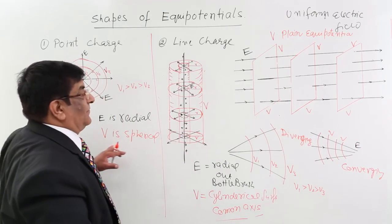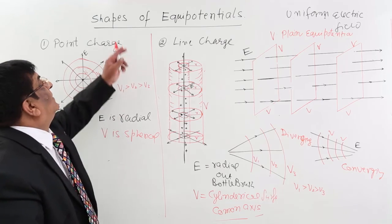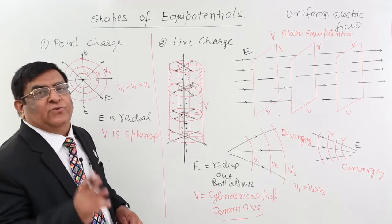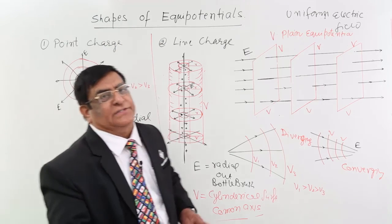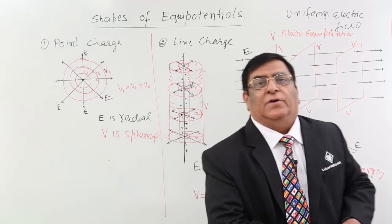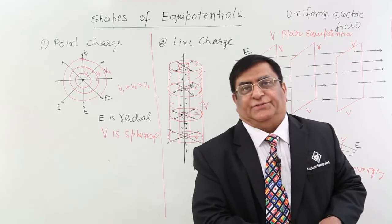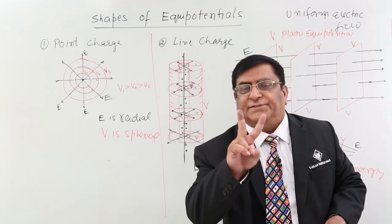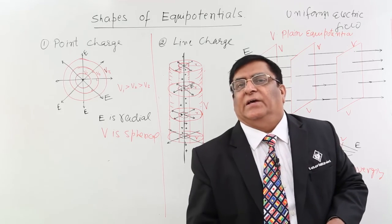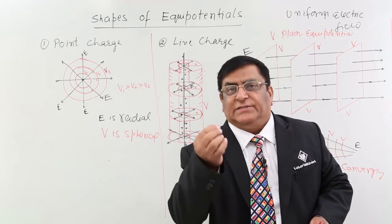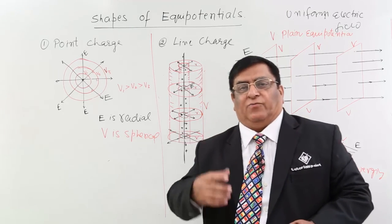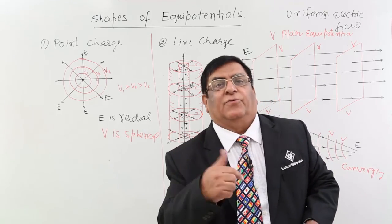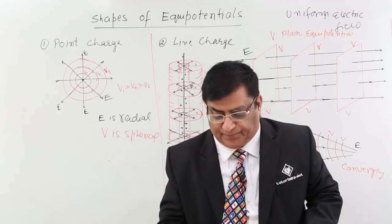These are a few shapes of equipotentials. There are two very important shapes, and those are for dipoles. If there are two charges, plus-plus, and two charges, minus-minus, we will next see what the equipotentials will be for those two cases. Thank you.